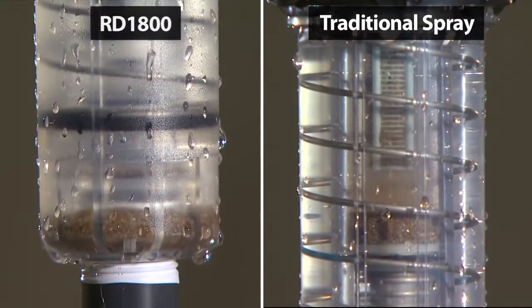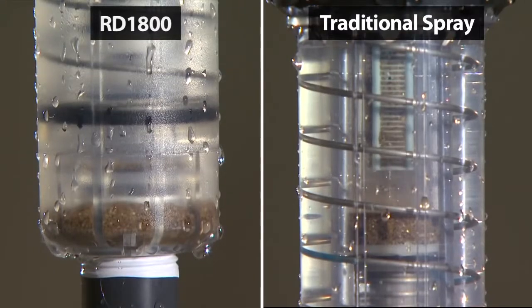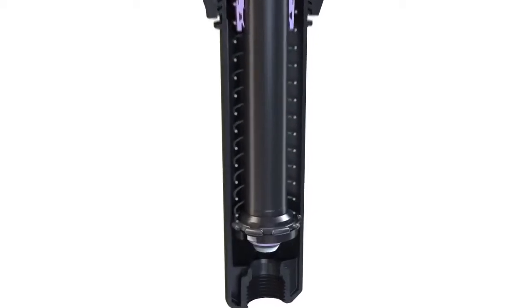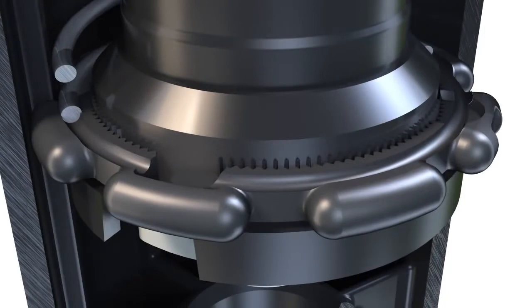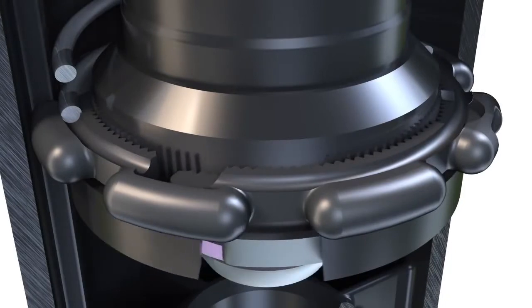Watch how when other stems and nozzles become clogged with grit, the RD1800 remains clear. The RD1800's ratchet mechanism was designed to easily adjust during installation,